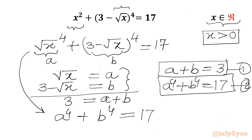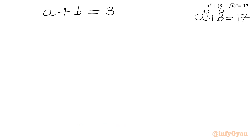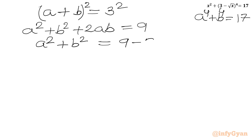We need to solve this system for the value of a only — once a is known, x will be known. From equation 1, a plus b equals 3. Squaring both sides: a² plus b² plus 2ab equals 9. Subtracting 2ab from both sides, we get a² plus b² equals 9 minus 2ab.